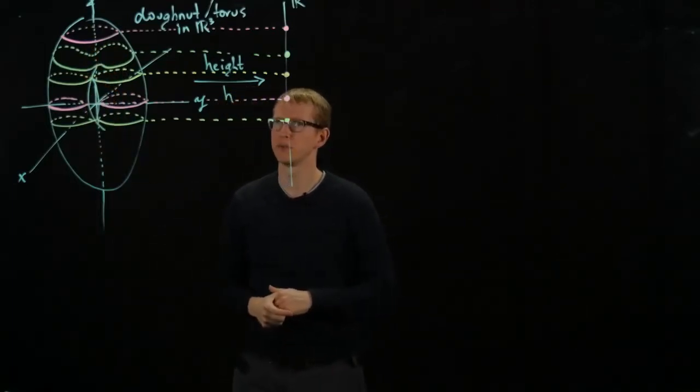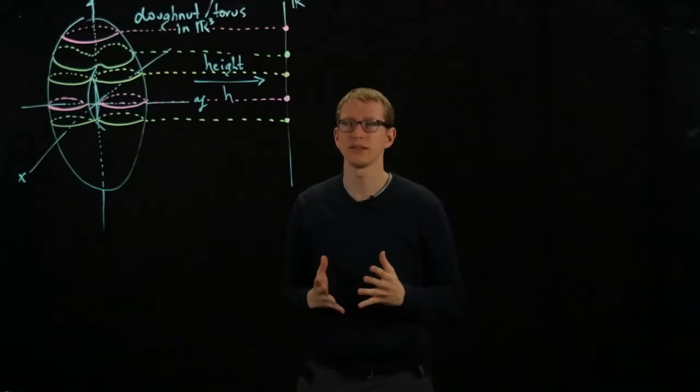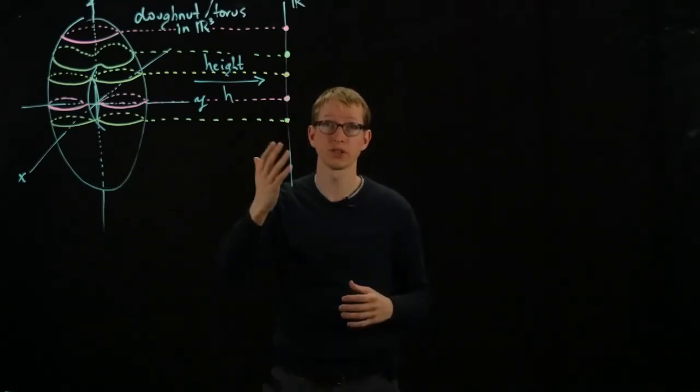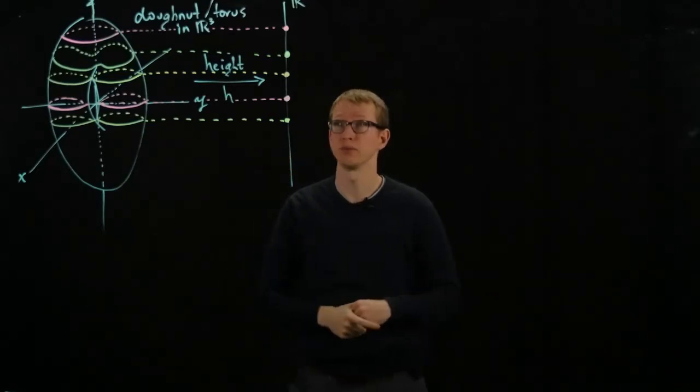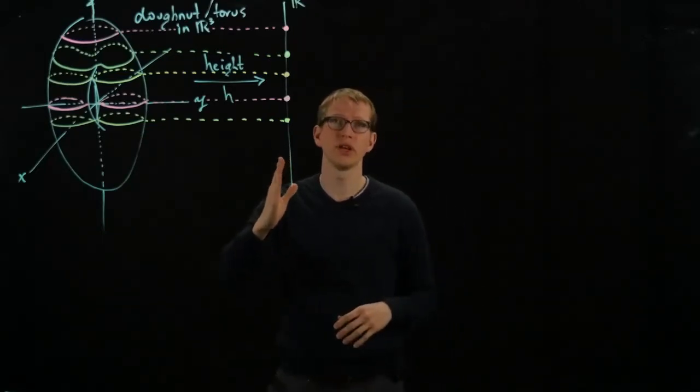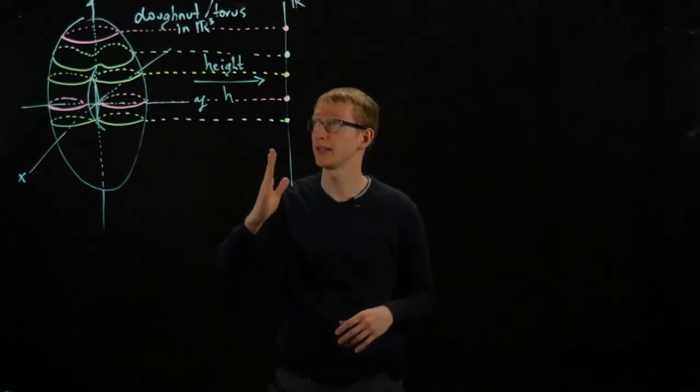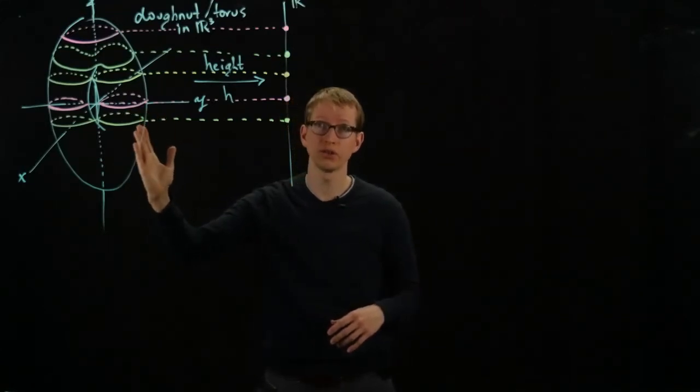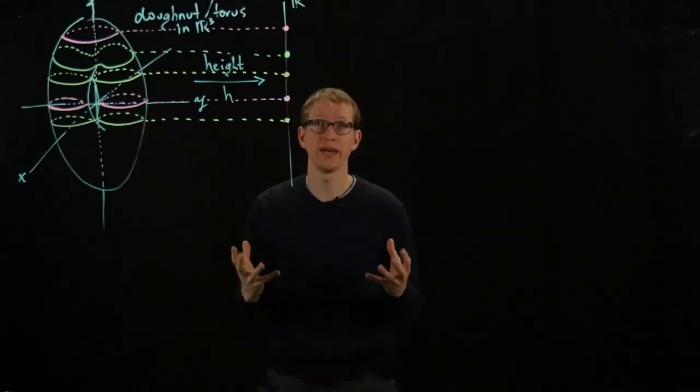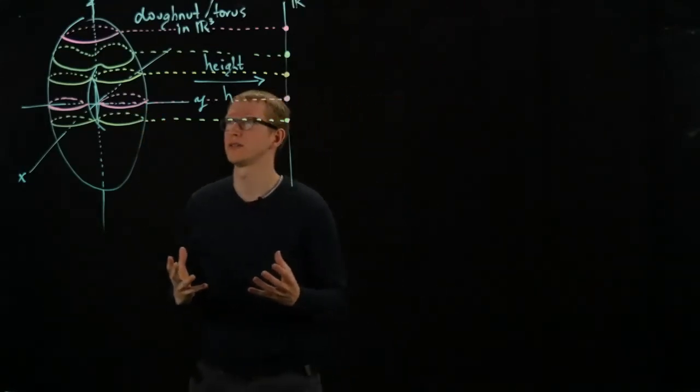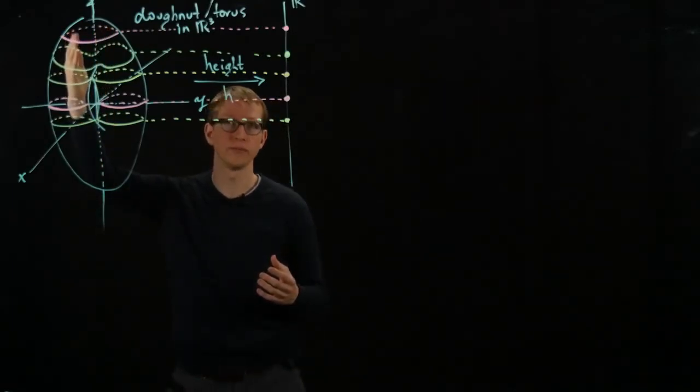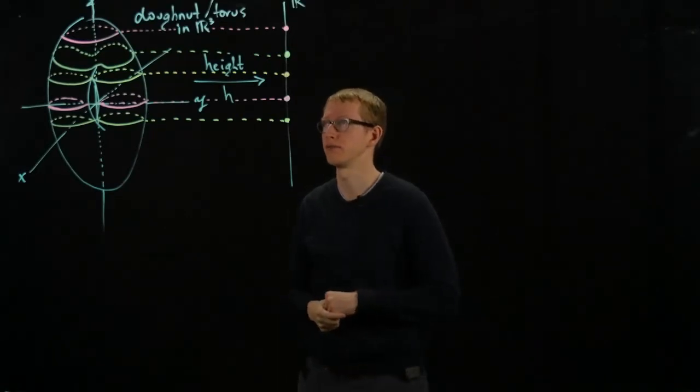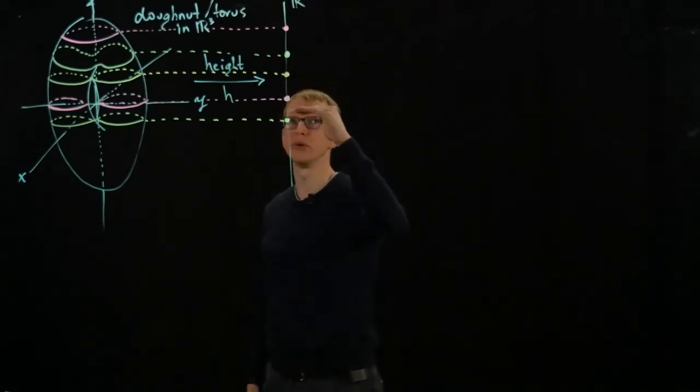And so some of the observations we make from looking at this picture is that for a function such as the projection function, which is an example of a differentiable function, the inverse image of some of its points, in fact it looks like most of them, are actually lower dimensional sort of sub-manifolds. Whatever that means, it's something that looks like it has one fewer dimension, and it looks like a line if I zoom in close enough, except for some very special points.